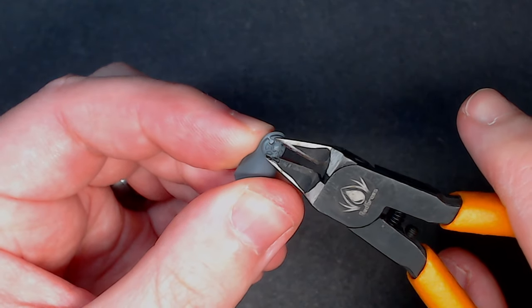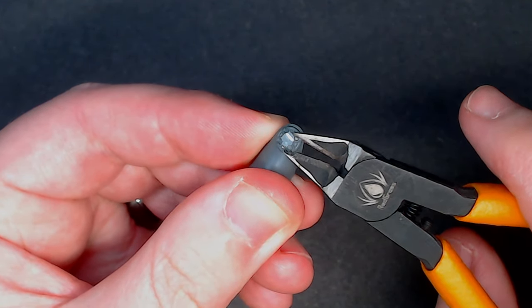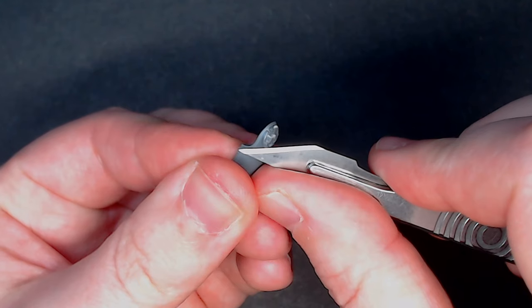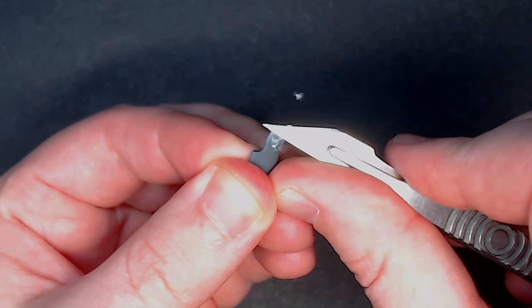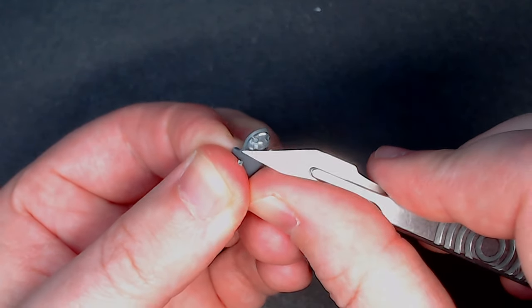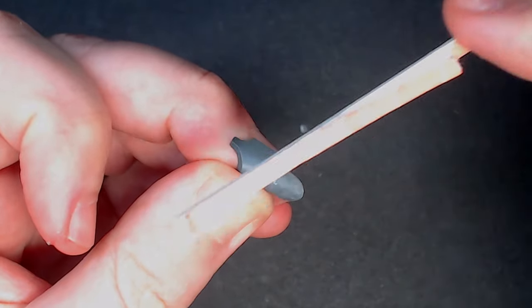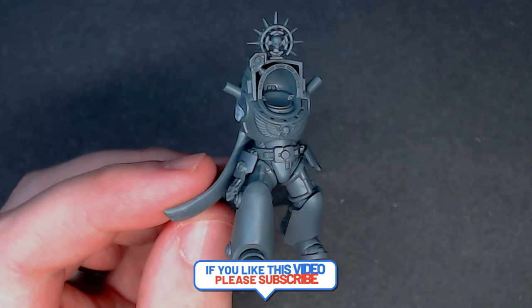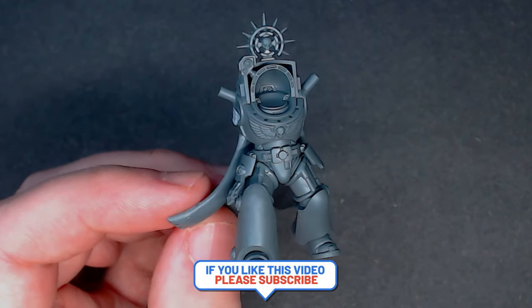In preparation for the Imperial Fist symbol that I'm going to be adding to the knee pad, with the combination of my hobby clippers, hobby knife and sanding sticks I removed the Crux Terminatus from the right knee pad. Once I was happy with how that was looking I glued the shin pads to the legs as well as the small little hip armor pieces.